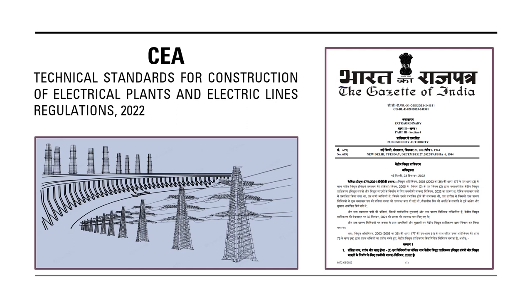In this presentation, we will discuss the CEA Technical Standard for Construction of Electrical Plants and Electrical Lines Regulation 2022. This is a revised, updated version of the standard published earlier in 2010, reflecting significant changes due to technological upgradation, the need for flexibility arising from system changes, the ongoing green energy transition, and required levels of transmission security optimization in planning from generation to transmission to distribution.